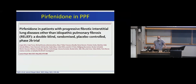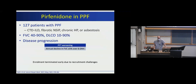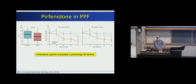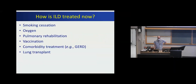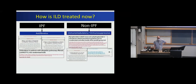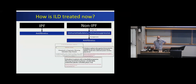The last study I'll mention is pirfenidone in progressive pulmonary fibrosis other than IPF, including four different diagnoses with similar enrollment criteria. This smaller study was terminated early due to recruitment challenges just before the pandemic started, but despite finishing early, pirfenidone was again superior to placebo in preventing FVC decline, with consistent benefit across several different ways of calculating outcomes. So we now know that if you progress despite immunosuppressive medications, there's good evidence for use of antifibrotic medications in that context — both nintedanib and pirfenidone have data supporting benefit.